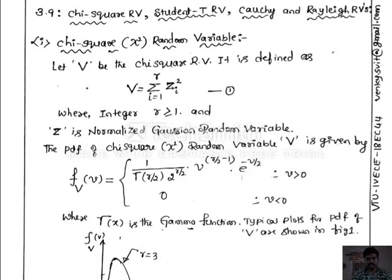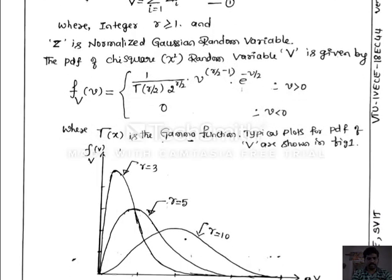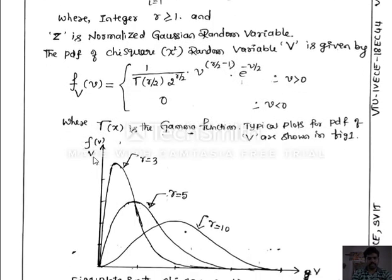The typical plots of the PDF curve for the chi-square random variable V are shown in figure 1 for R equal to 3, R equal to 5, and R equal to 10. It is found that as the value of the order increases, the magnitude of the PDF curve reduces, whereas the width of the chi-square function increases as the value of the order increases.